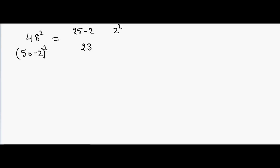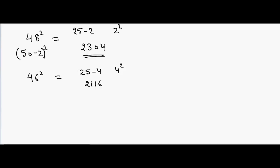For 48 squared, we subtract 2 from 25 and then compute 2 squared, giving 2304. Another example: 46 squared — we subtract 4 from 25 and compute 4 squared, giving 2116. For 53 squared, it's 25 plus 3 and then 3 squared, giving 2809.